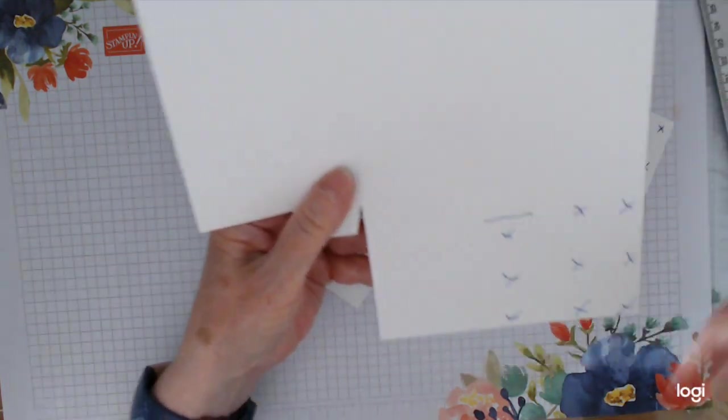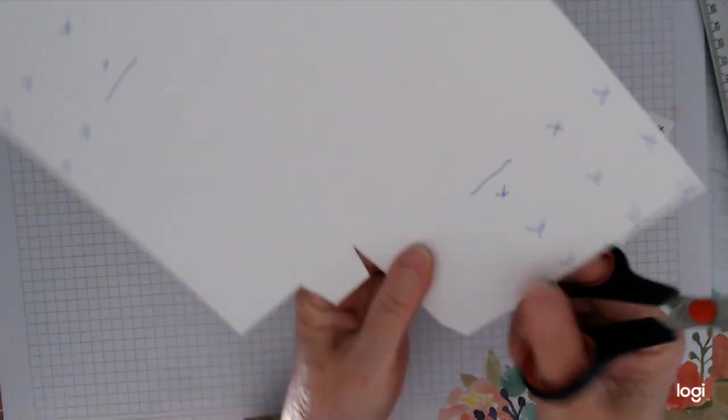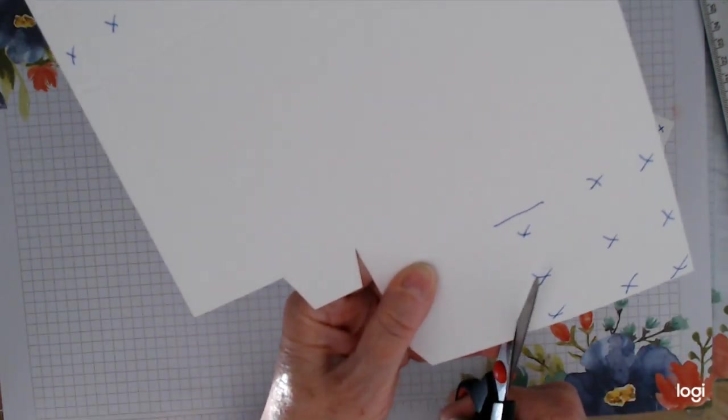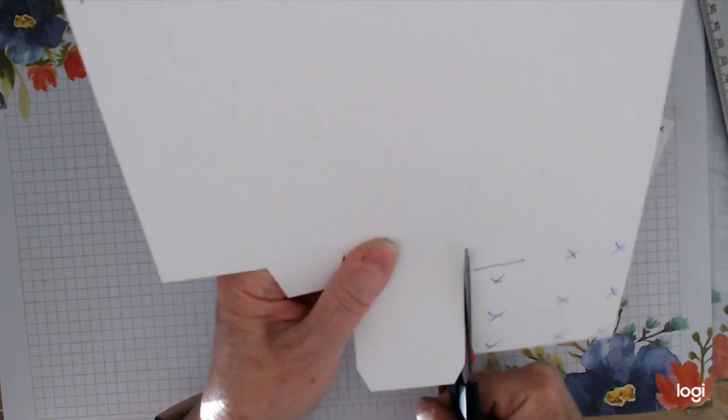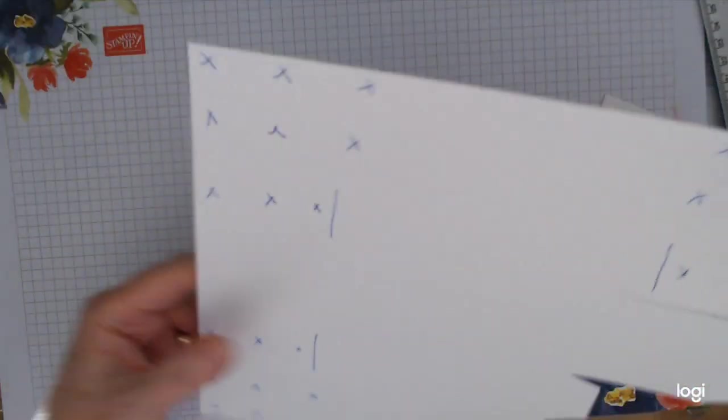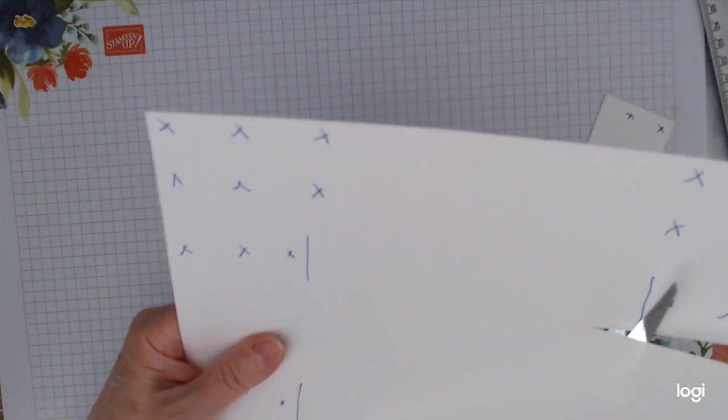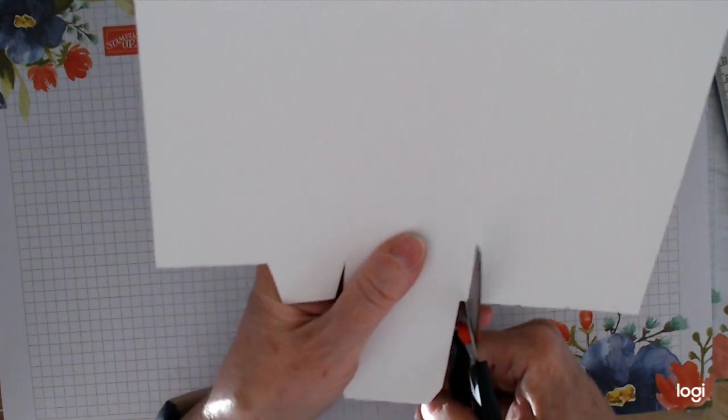Keep them nice and tidy. And then this is going to be the fold-in part, so you can snip those away, and then go straight up again. Go straight up again.